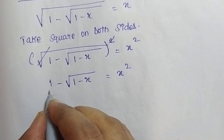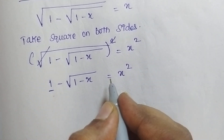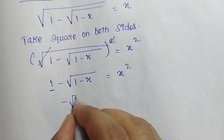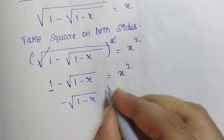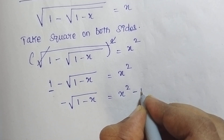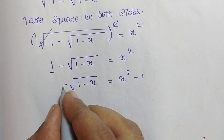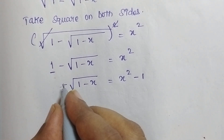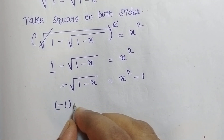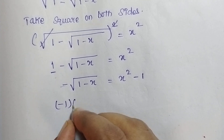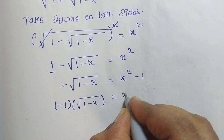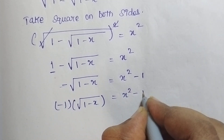Now I am going to shift this 1 towards the left hand side. Therefore minus √(1 - x) which is equal to x² - 1. This minus can also be written as -1, which means -1 into √(1 - x) is equal to x² - 1.